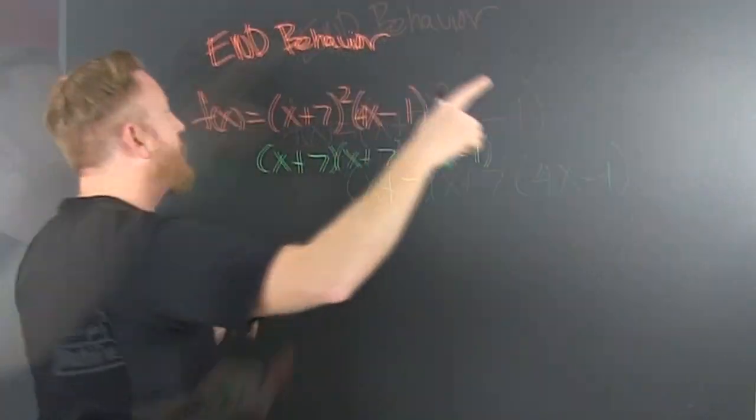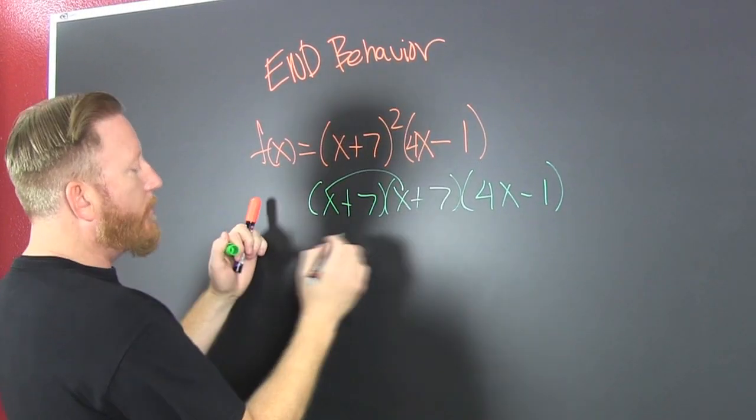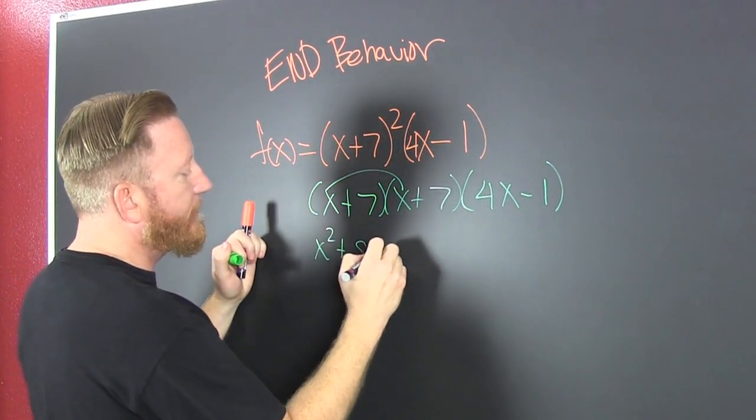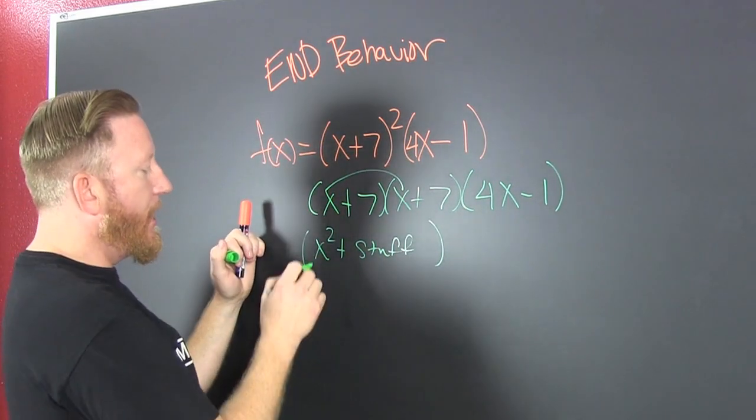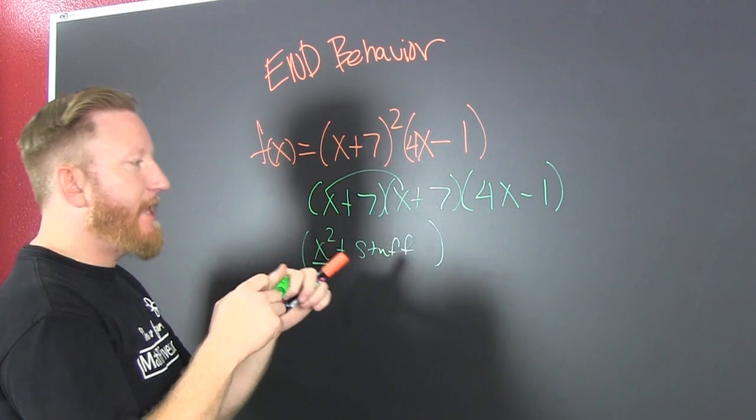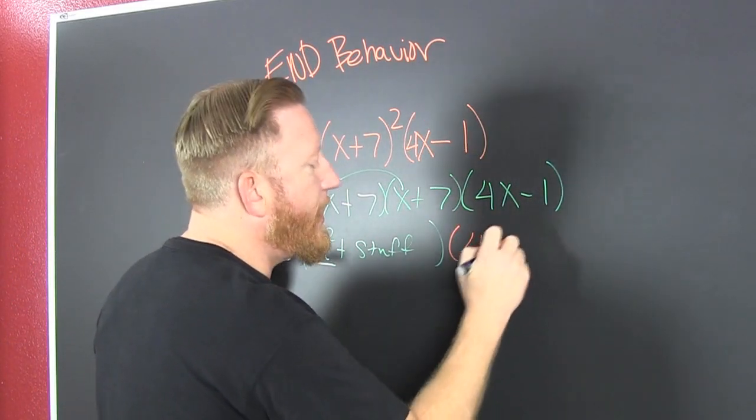But we can shortcut it by taking a look at if we were to multiply this out that would be x squared plus stuff. And then when we gather, collect, and combine my leading term gonna be that. This is gonna be what it is. That's 4x minus 1.